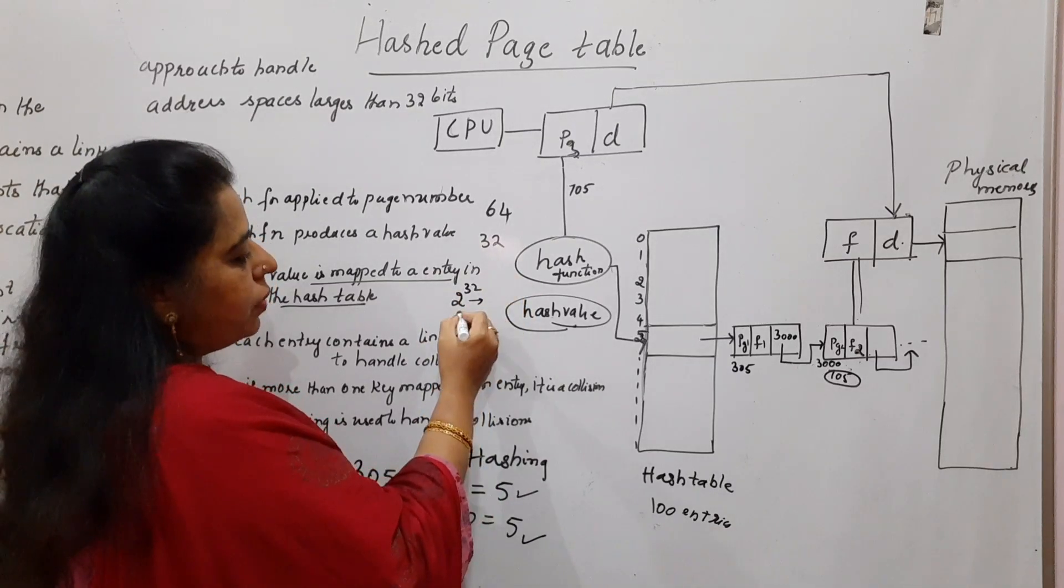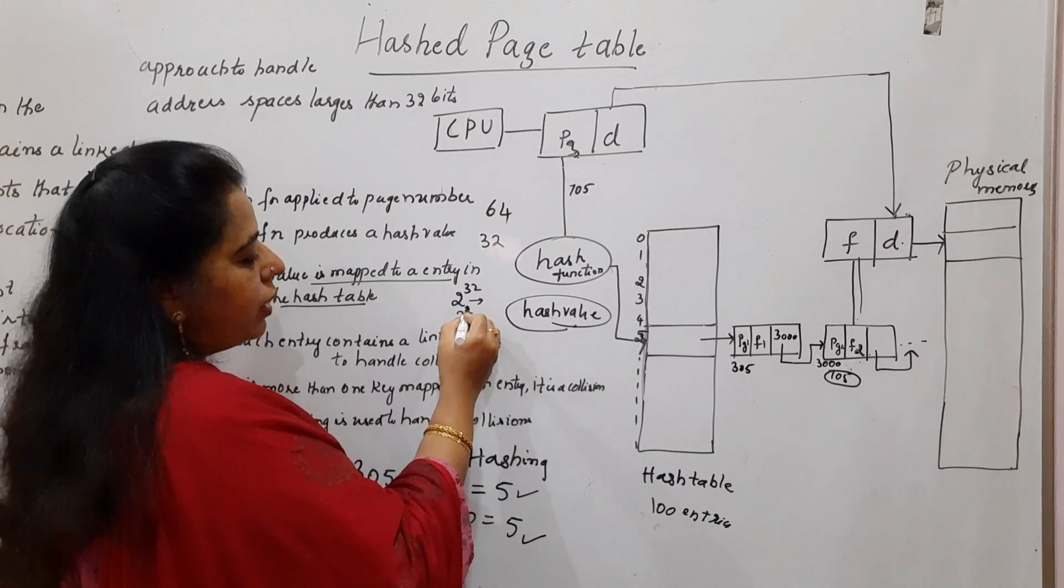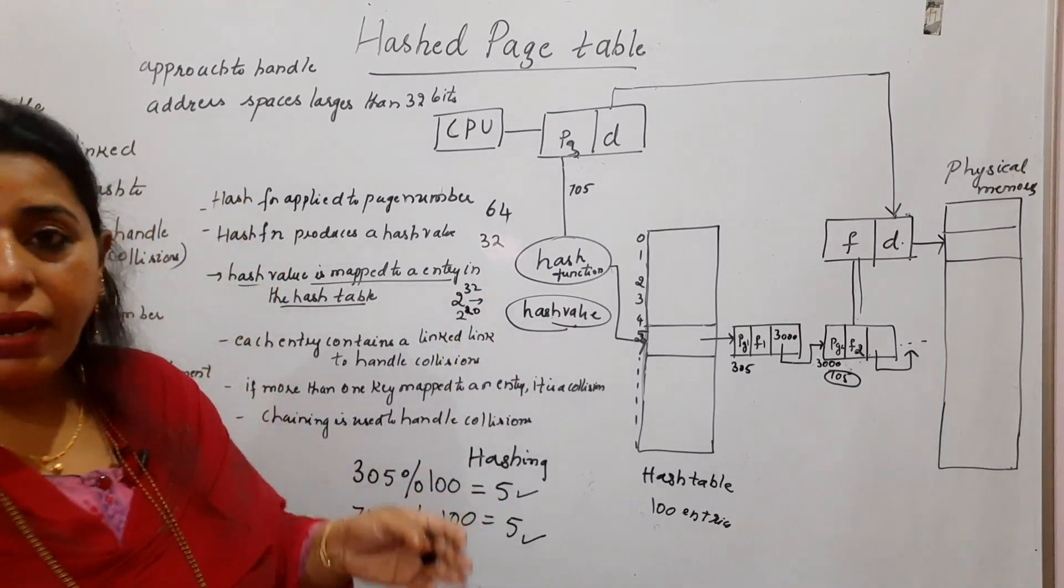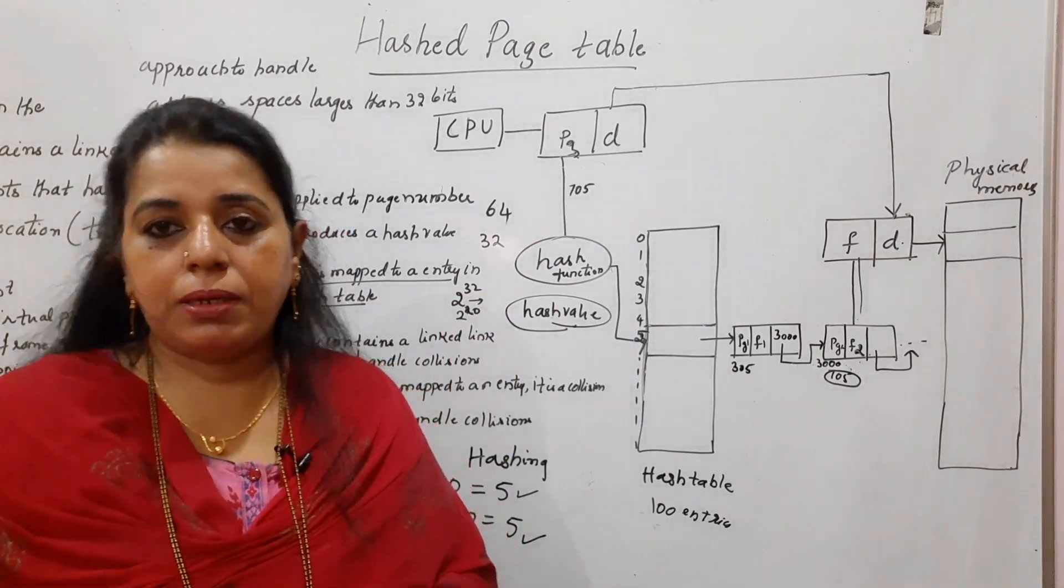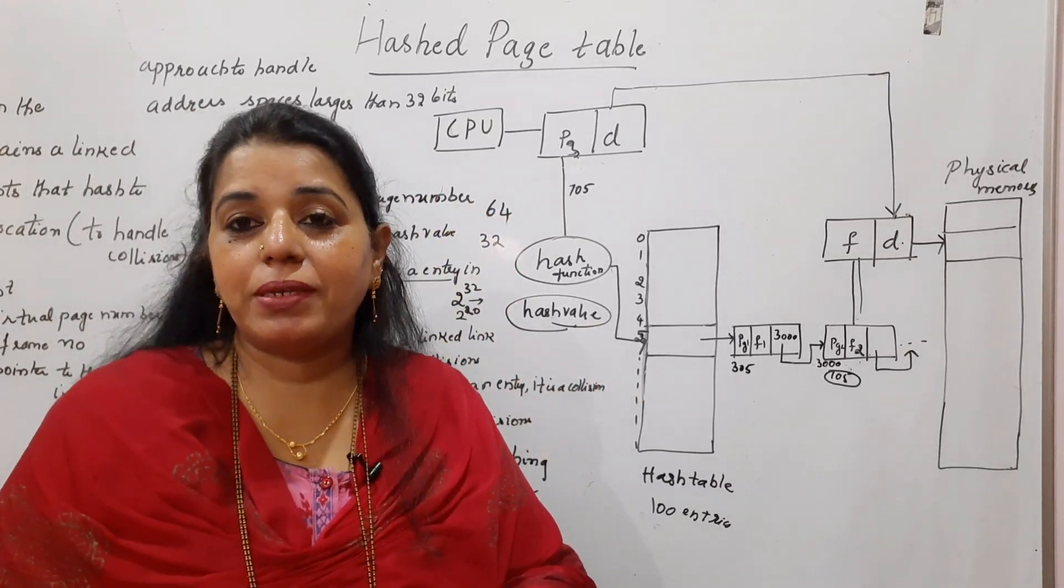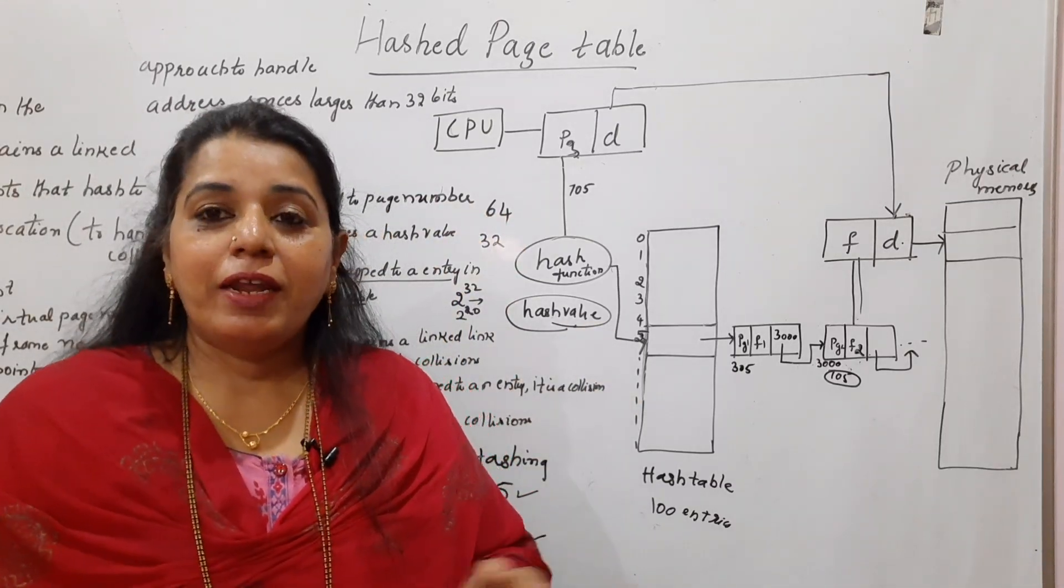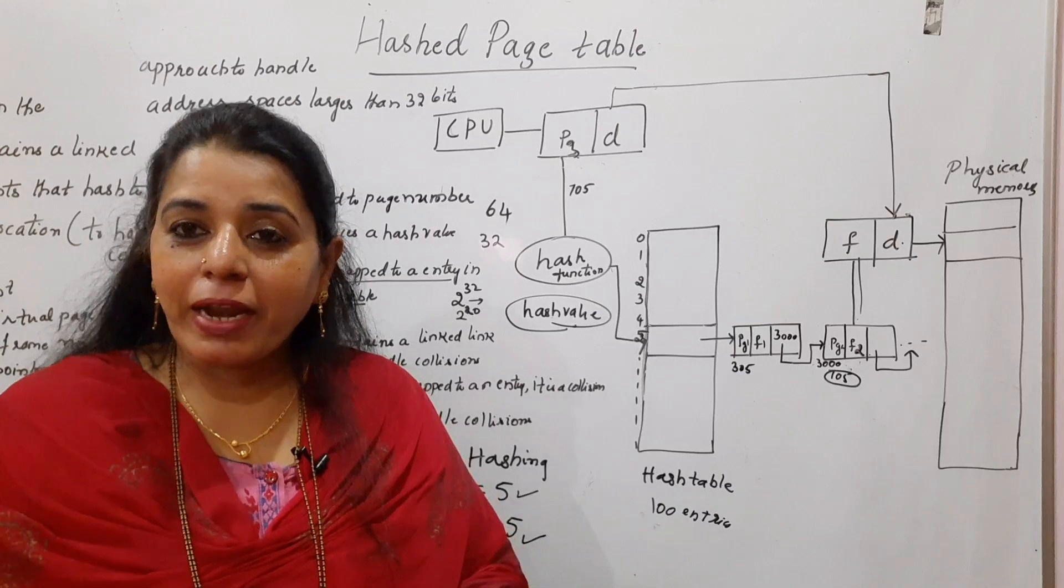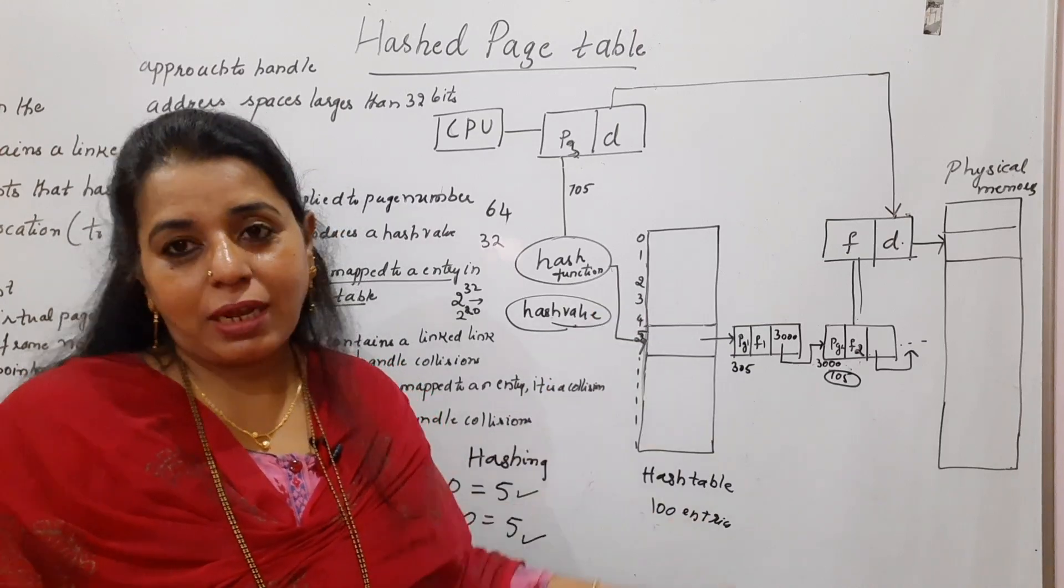Just imagine the previous topic when I said 32 bits are used to represent a logical address, then 2 to the power of 32. In that, if suppose 20 bits are used to represent the page numbers, then you are having 1 million entries, 1 mega entries in the page table. Now, if you take, for example, 64 bits are used to represent the logical address, then definitely the page table becomes very huge.